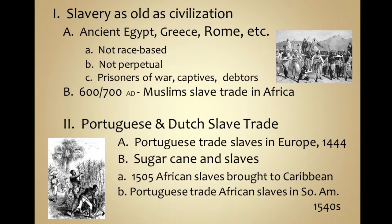In 1444 the Portuguese, now involved in taking slaves from the west coast of Africa, began selling them to different European countries. It is in the islands where sugar cane becomes the main cash crop that really increased this trade in Africans, selling them into slavery on these sugar plantations.